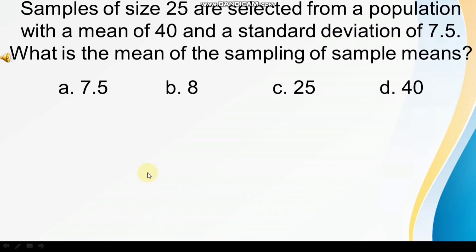Samples of size 12 are selected from a population with a mean of 40 and a standard deviation of 7.5. What is the mean of the sampling distribution of the sample means? A. 7.5, B. 8, C. 25, D. 40.